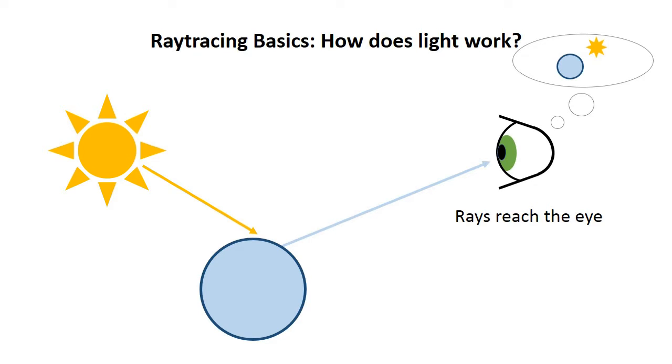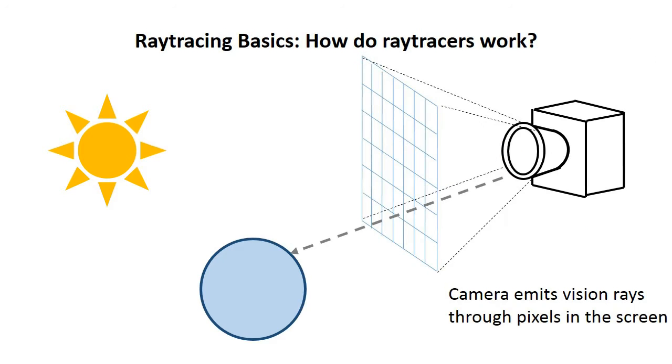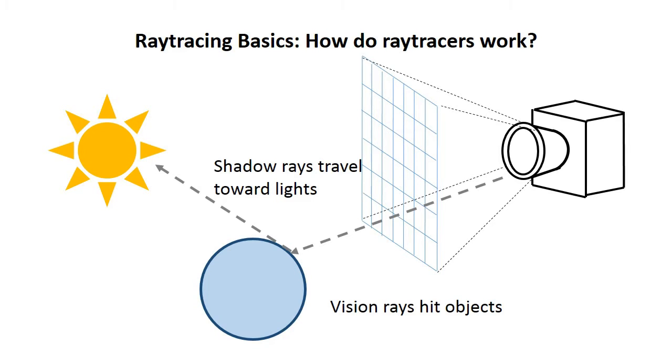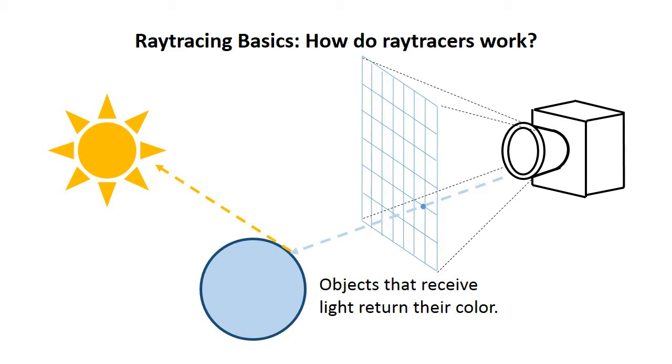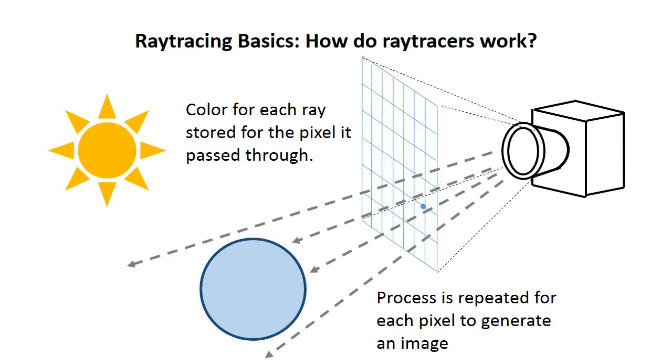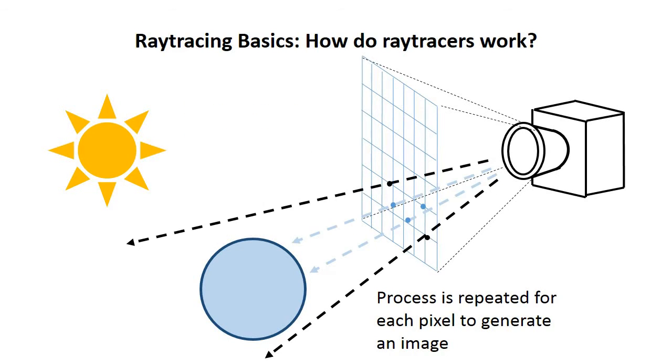Ray tracers work by placing a camera where that eye would be. That camera then emits vision rays through the pixels in the screen in the other direction. Those rays can hit objects, and if they do, those objects can then look toward light sources to determine whether or not they're lit. If they are, the lights return their color and strength. The object can then return its color to the camera, and you have the color of your pixel. If you repeat this many times over all the pixels in your image, you can reconstruct it and display it to the user.